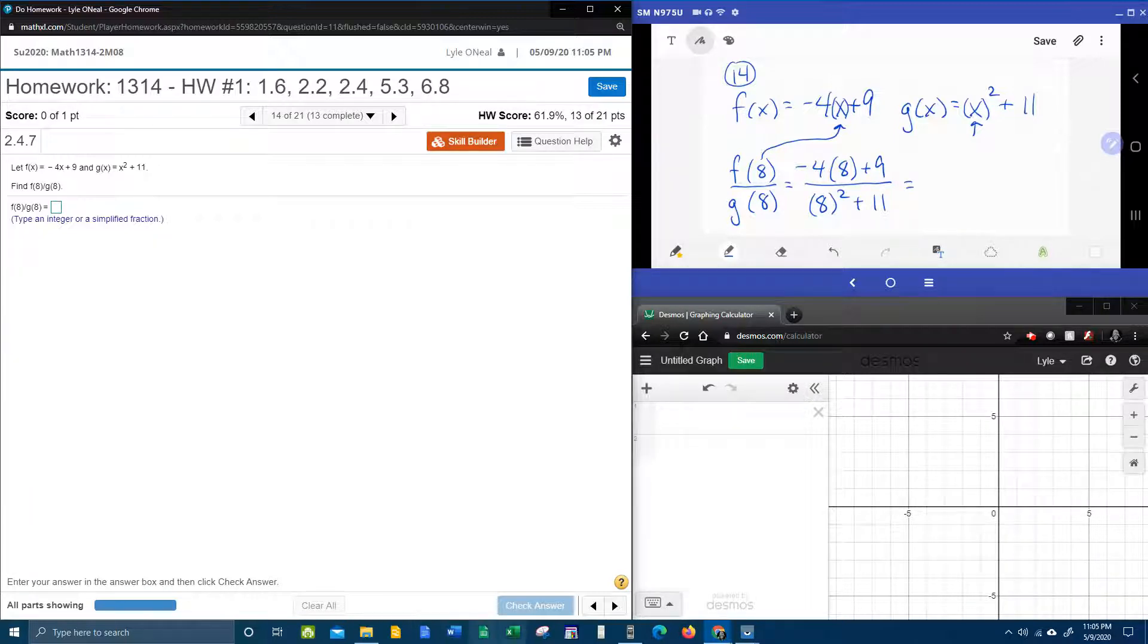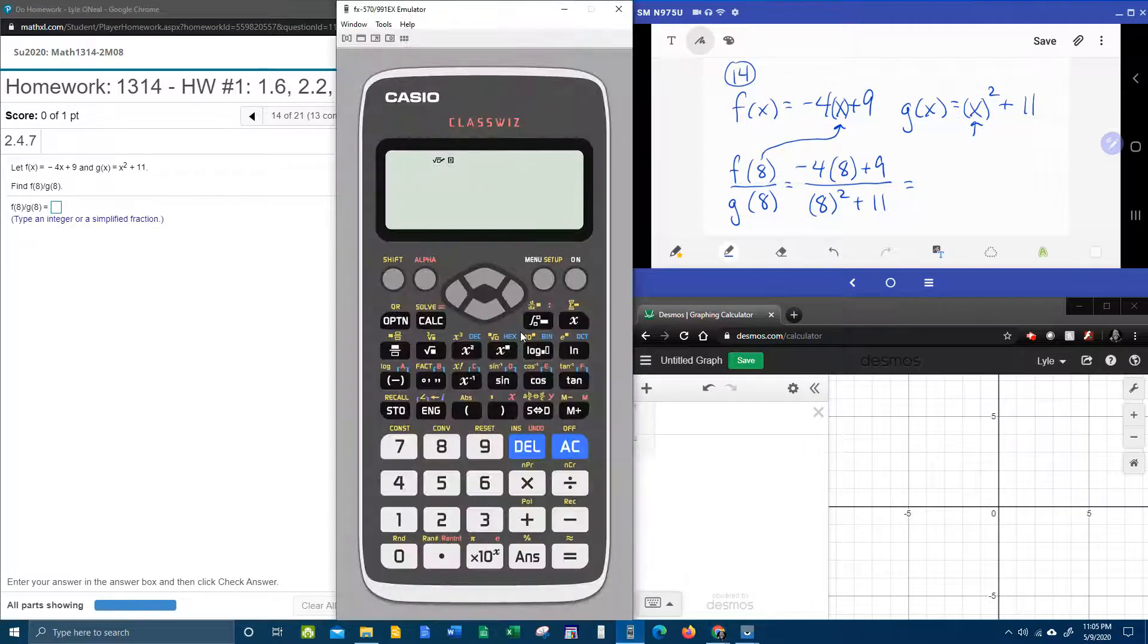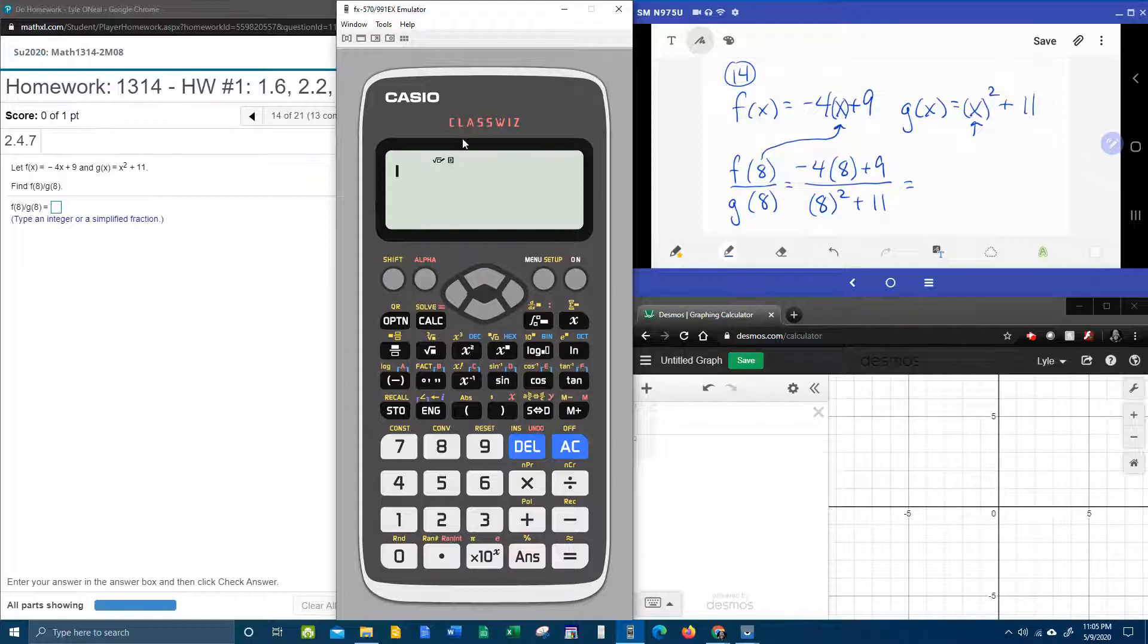And then the last thing you've got to do is just pull up your handy-dandy calculator. I use the Casio FX 991EX ClassWiz. This is a fantastic calculator. It's got the cool fraction button. And we can type this in just the way it looks. Negative 4, 8, plus 9.